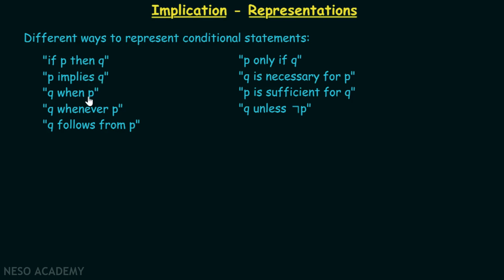'q when p' — obviously when p is true, then q definitely needs to be true. This is what this particular statement means. 'q whenever p' is also the same as 'q when p.' 'q follows from p' — simply, q follows from p because when p is true, then q has to be true. Therefore, we can conclude that these are all multiple ways to represent the conditional statements.